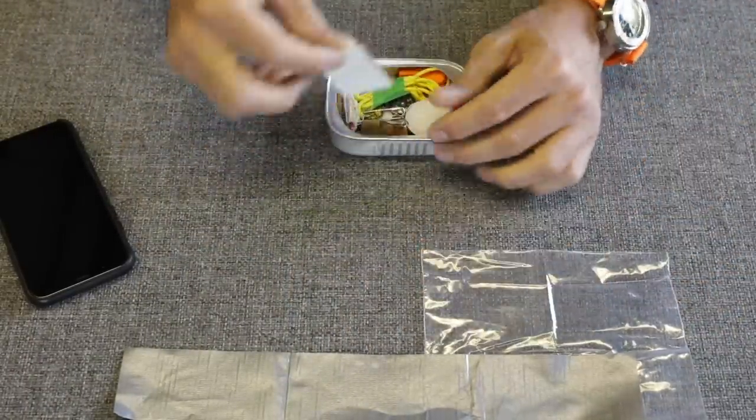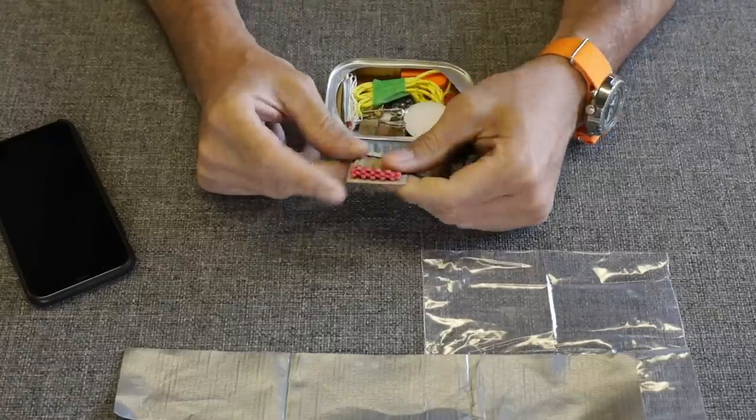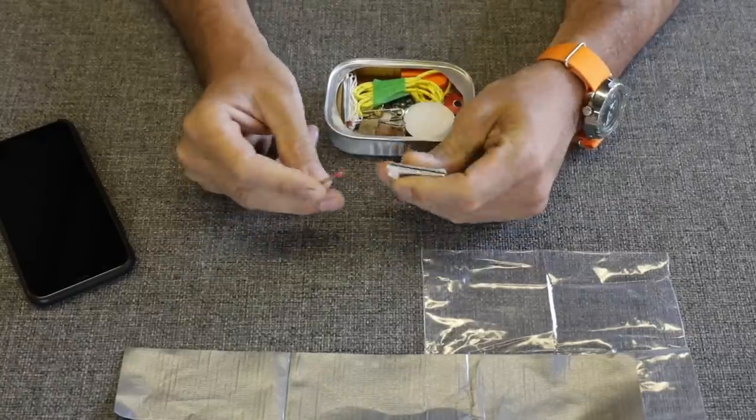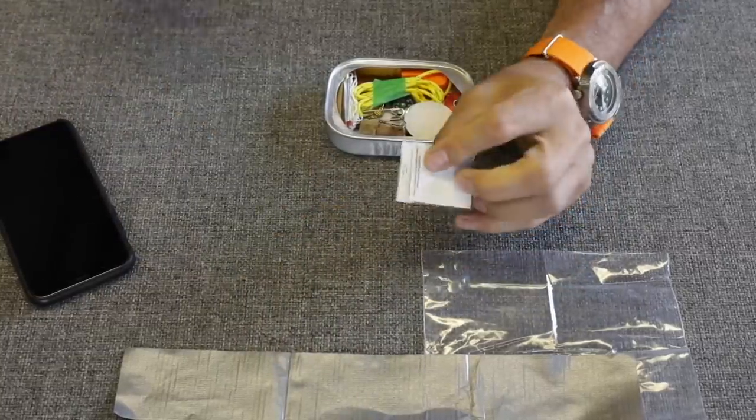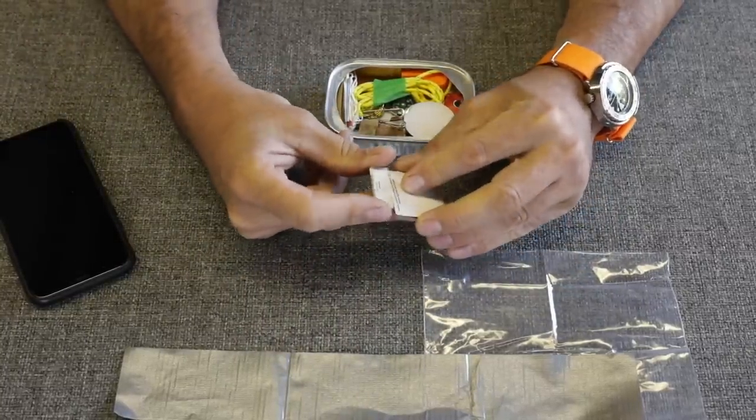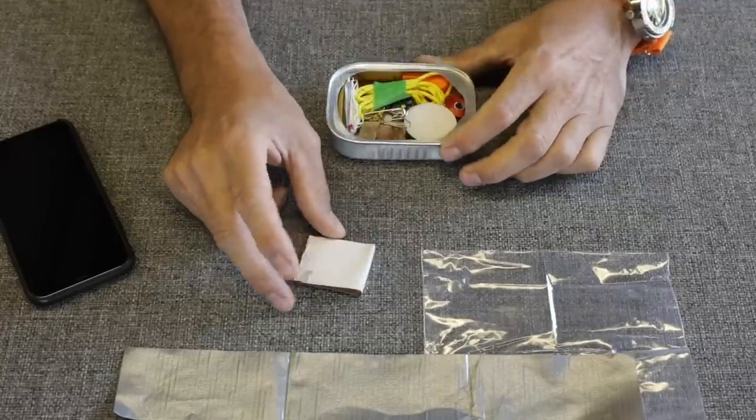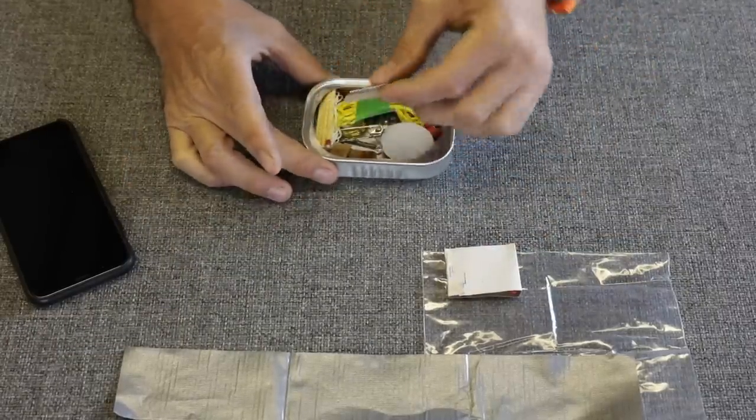Next we have paper matches, just your standard paper matches. Maybe wooden matches would be a better option. These are a little bit fragile when it comes to moist areas, but better than none. I think that's probably a good option. I don't know that you would even get the wooden matches inside of one of these containers. It's very small. This is actually pretty cool kit.